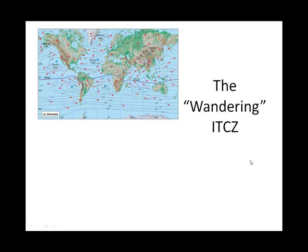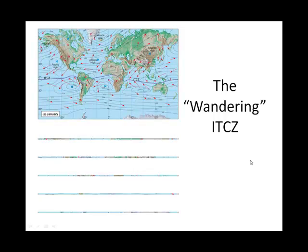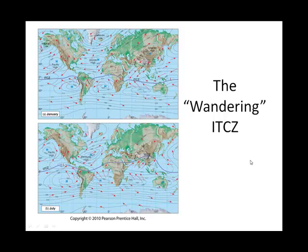Just to show you the wandering intertropical convergence zone — these are the slides we looked at, first in January and then in July. Focus on the intertropical convergence zone and see how it wanders: in January it goes south, and in July it wanders north.